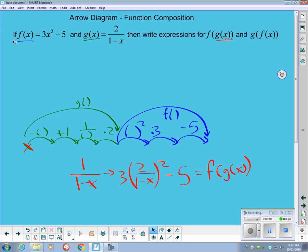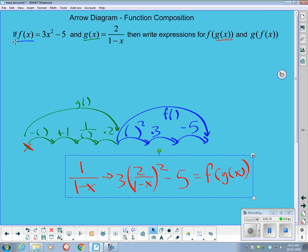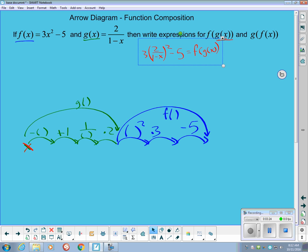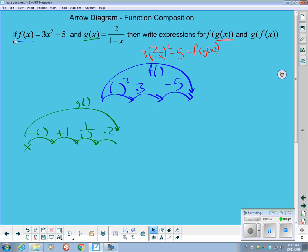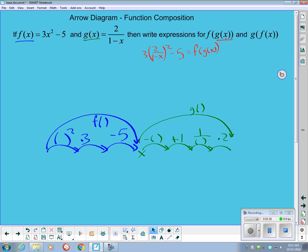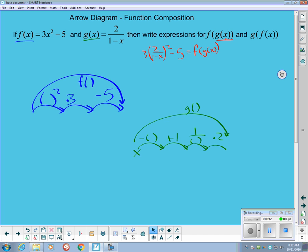And if I want to do g of f of x, then not a significantly different thing. Let's get this up out of our way here. If I want to do the g of f of x, then all that means is the arrow diagram for f is going to happen first. And then the arrow diagram for g is going to happen after that.